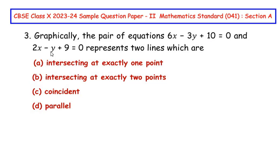And 2x minus y plus 9 equal to 0 represents two lines which are: the options are intersecting at exactly one point, intersecting at exactly two points, are they coincident, or are they parallel?